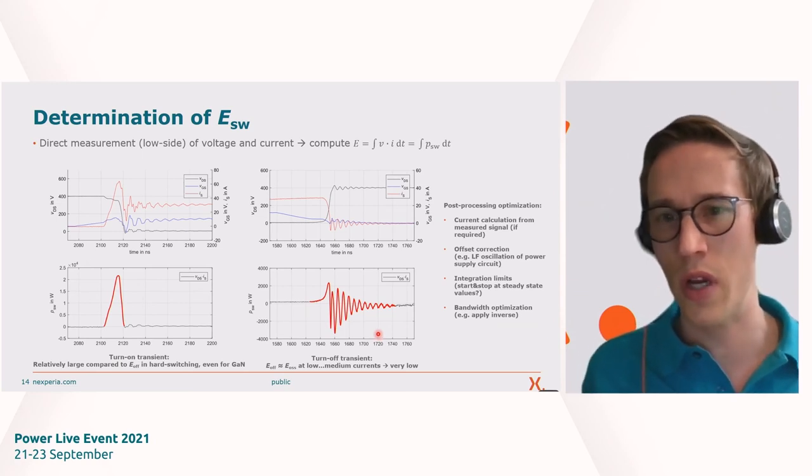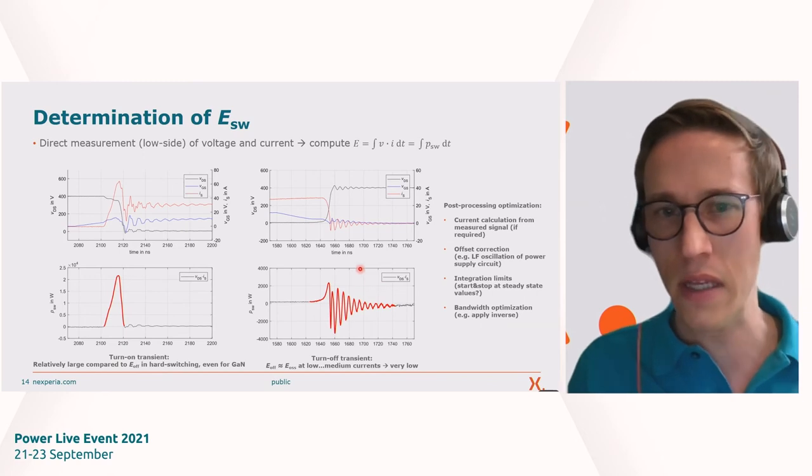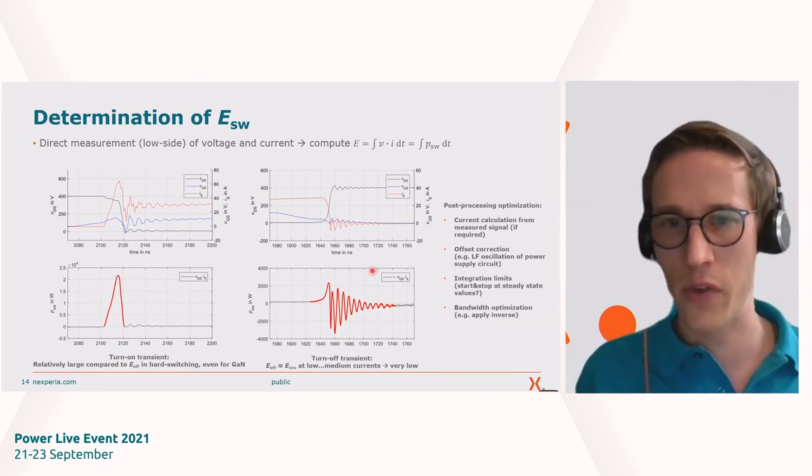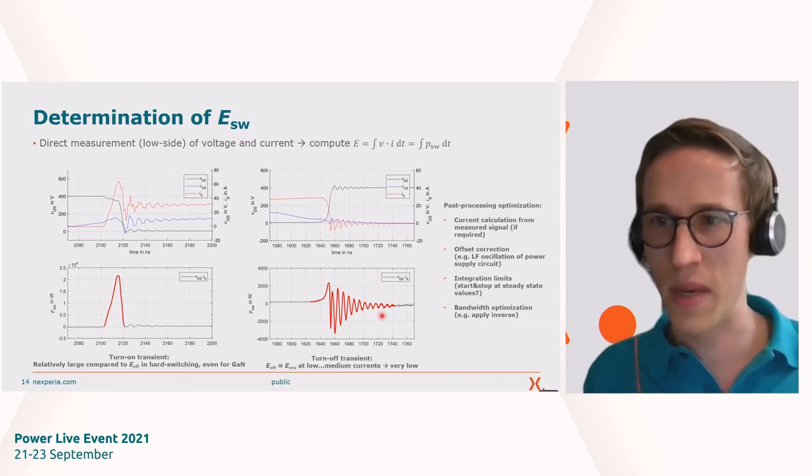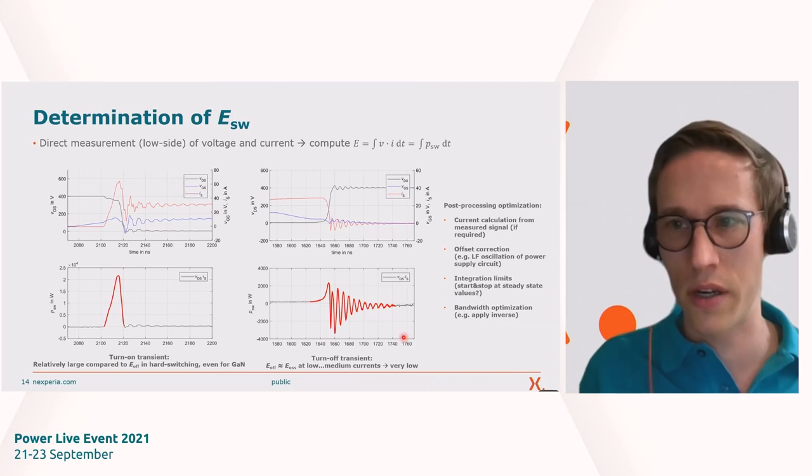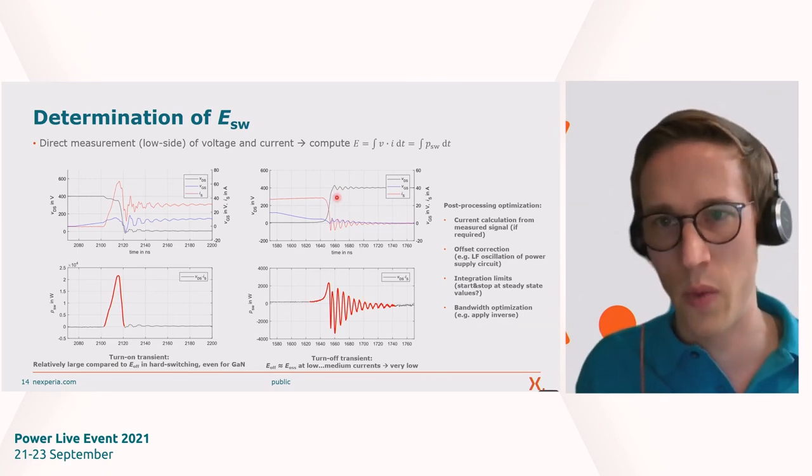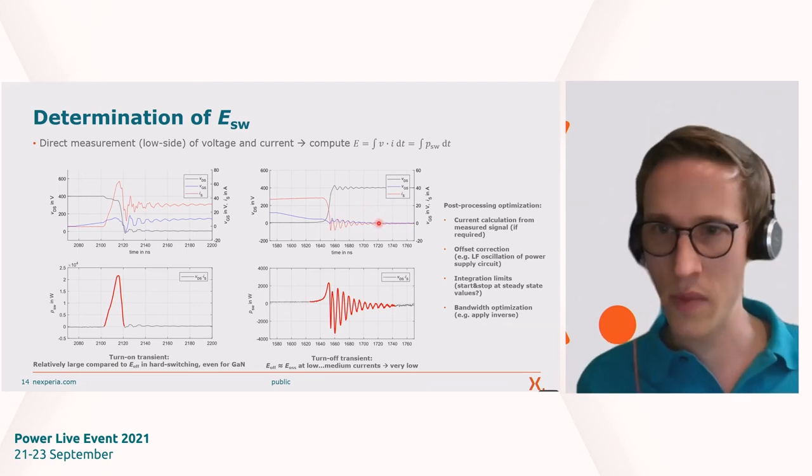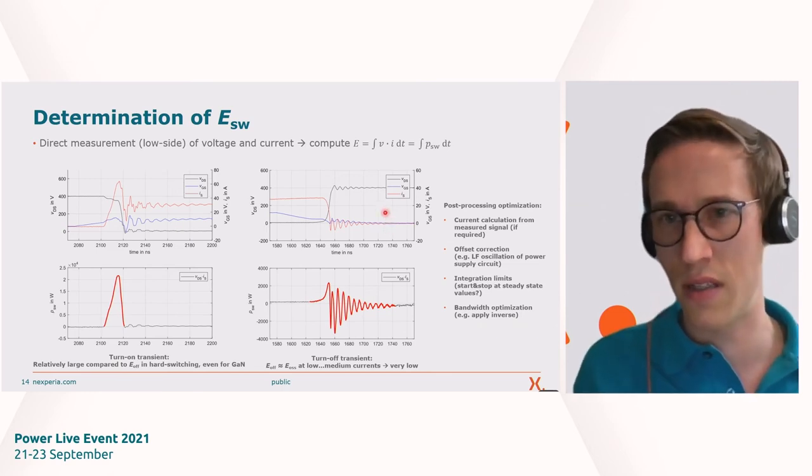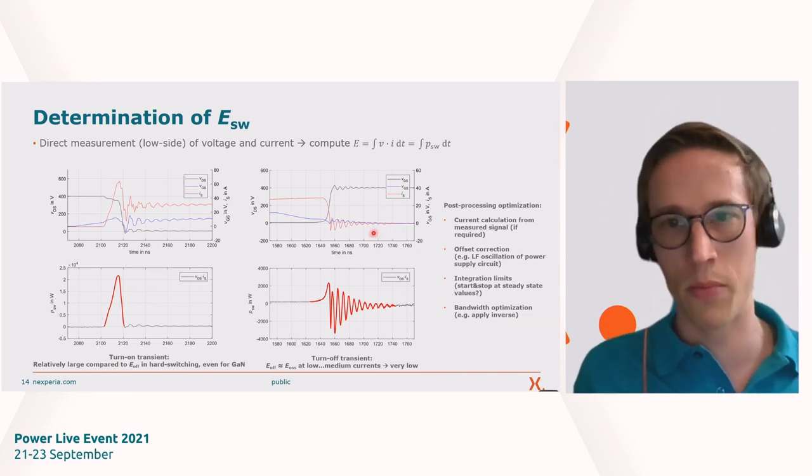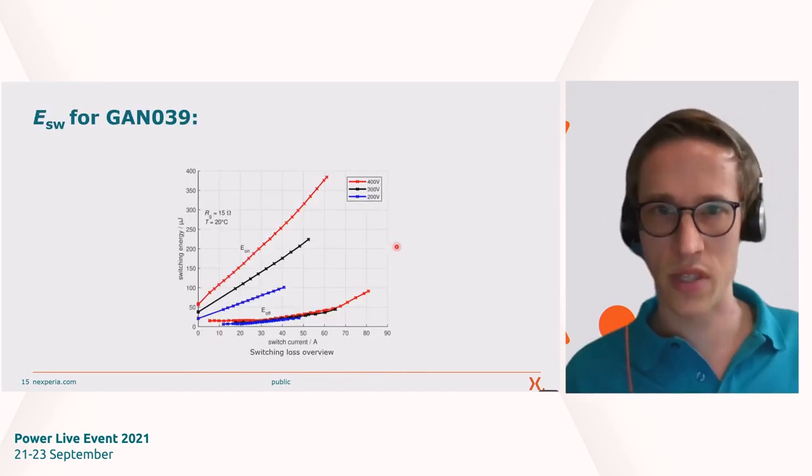Some examples are if you use a field sensor, for example, you will need to do some post-processing anyway, integrating the signal and removing offsets. But also, for example, if you do the test and have some low-frequency oscillation of the power supply circuit on your measurements, you might also need to correct that. Also, as mentioned, the integration limits have to be checked. Do we start and stop at steady-state values? Or will we capture some of the extra energy stored in our parasitics on the way? That will also lead to errors and needs to be prevented. Also, a very sophisticated thing to do, which is something that I don't do, but if you have clear knowledge about your measurement setup and your probes, you can also apply the inverse to improve the results. But this is something that I don't do at the moment because I think the results are already quite precise.